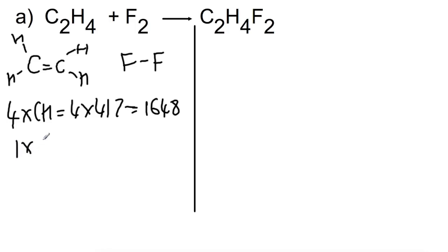We've got one times a C double bond C. So it's important that you have drawn that so you know which bond to look for in the table. And that's worth 612. And then one times an F-F bond, which is 159. So we have a total energy input of 2419 kJ.